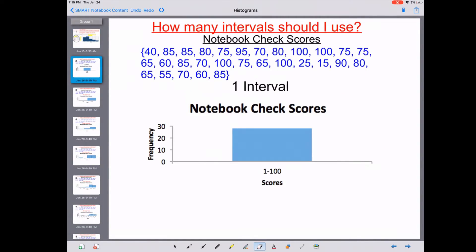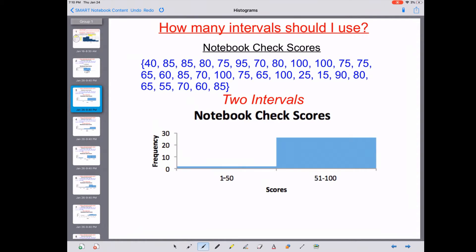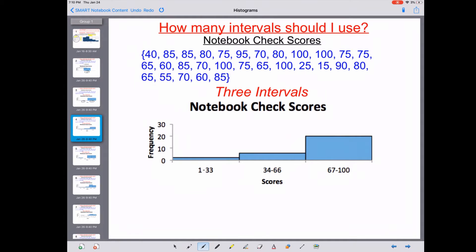Because obviously if I just do one, that's probably not going to be enough, right? That just tells me that I have about 30 scores between 1 and 100. One interval tells me nothing. Two intervals still doesn't really tell me much—looks like we have maybe one or two that scored between 1 and 50, but then a bunch that scored between 51 and 100. Still not a lot of information.